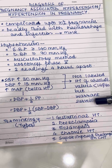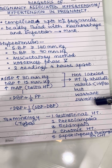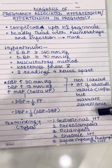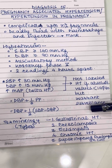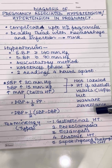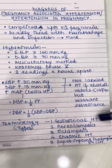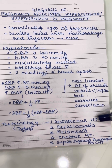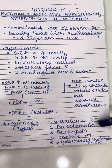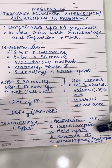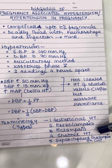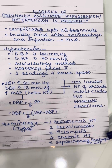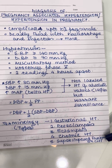Once we diagnose a patient to be hypertensive in pregnancy, we need to decide on the type of hypertension. This includes five types: gestational hypertension, preeclampsia, eclampsia, chronic hypertension, and superimposed preeclampsia on chronic hypertension.